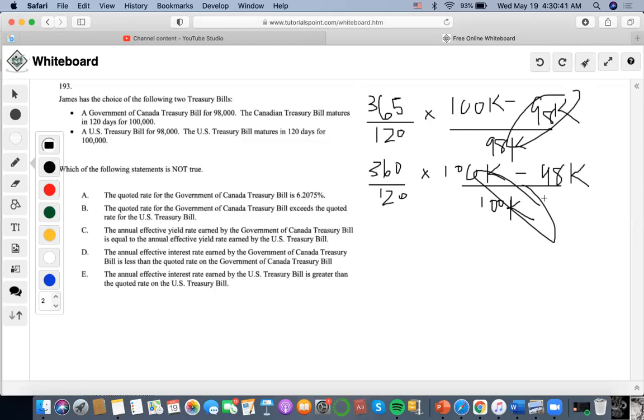So I'll do 100,000 minus 108,000 divided by 98,000 times 365 divided by 120 and get 0.062.